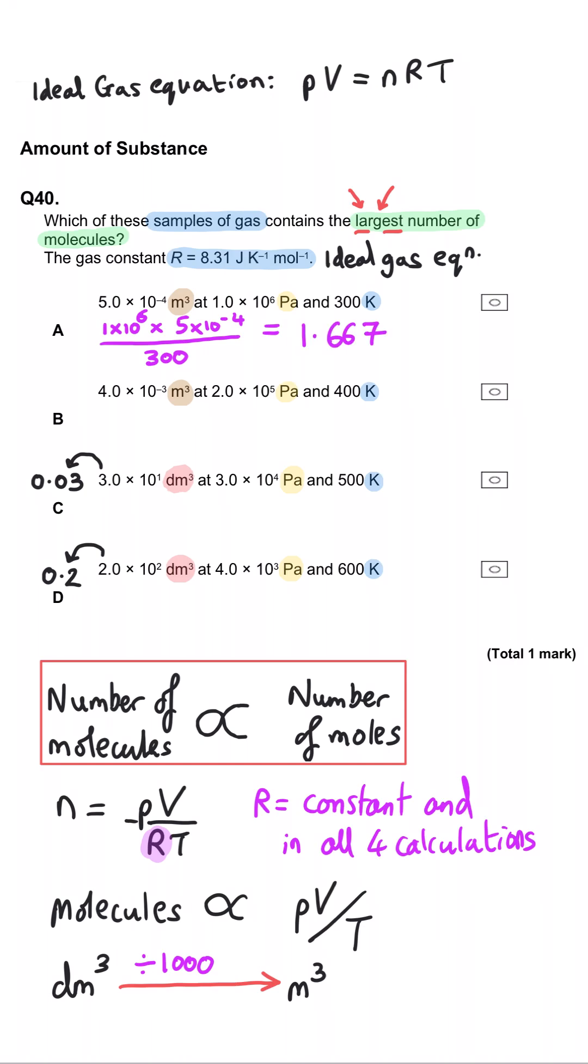When we run the numbers for A, we get 1.67 as our value. When we plug the pressure and the volume and the temperature in for B, we get a value of 2. So already we can see that B is a bigger number, so we can rule out A. Plugging the values in for C gives us 1.8. That's not as big as 2, so C is wrong.